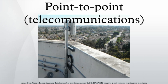This is contrasted with a point-to-multipoint or broadcast communication topology, in which many nodes can receive information transmitted by one node. Other examples of point-to-point communications links are leased lines, microwave relay links, and two-way radio. Examples of point-to-multipoint communications systems are radio and television broadcasting.